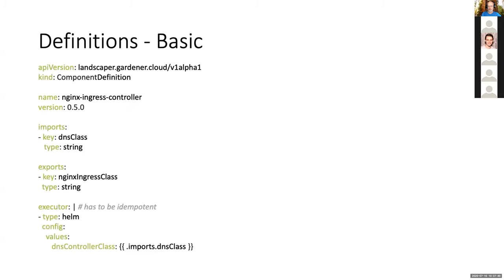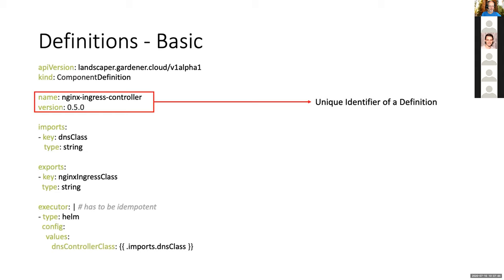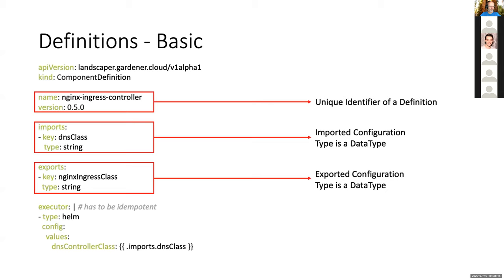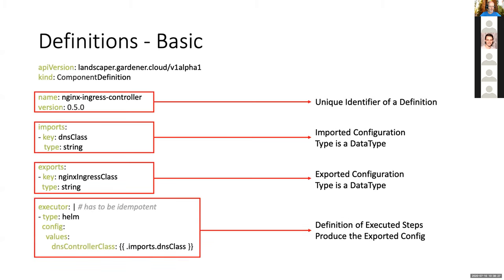Definitions look like this: you have a name and a version, which is the unique identifier of a definition — also the name the Landscaper looks for in the OCI registry. Then we have imports, consisting of a key and a type. For example, this component expects a DNS class with key 'dns-class' of type string. Same thing for exports: the Nginx controller exports something on key 'ngx-class' also of type string. And last are the executors, where we define our deploy items.